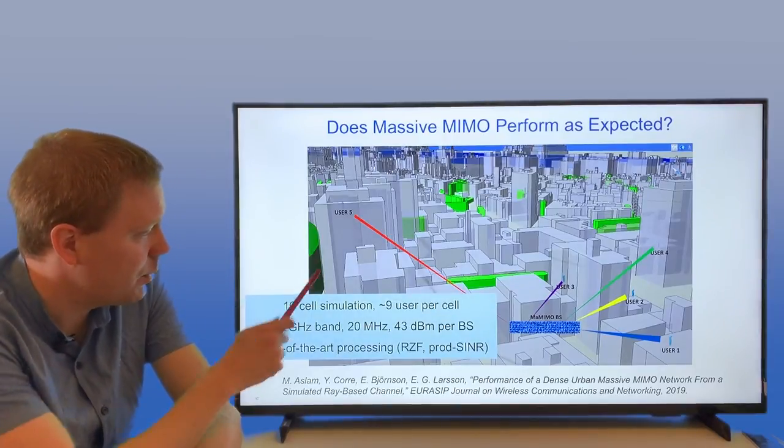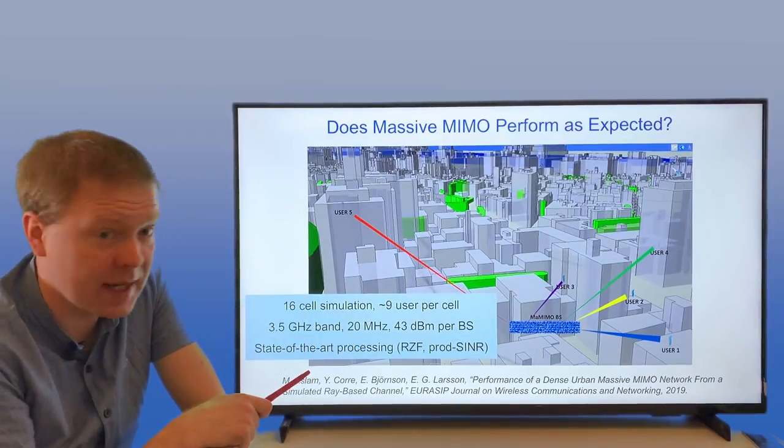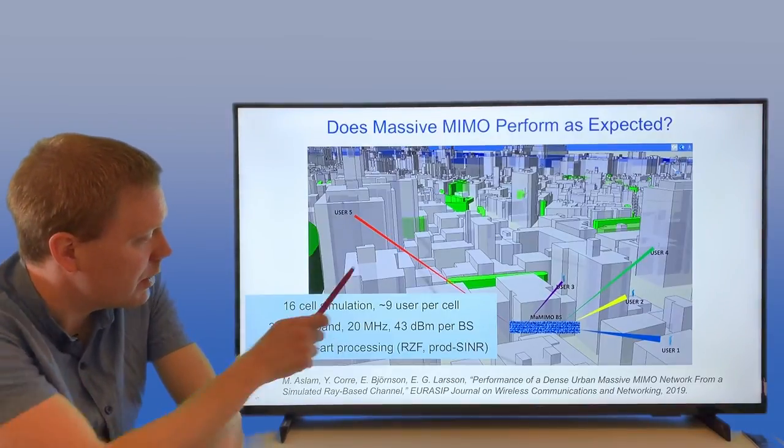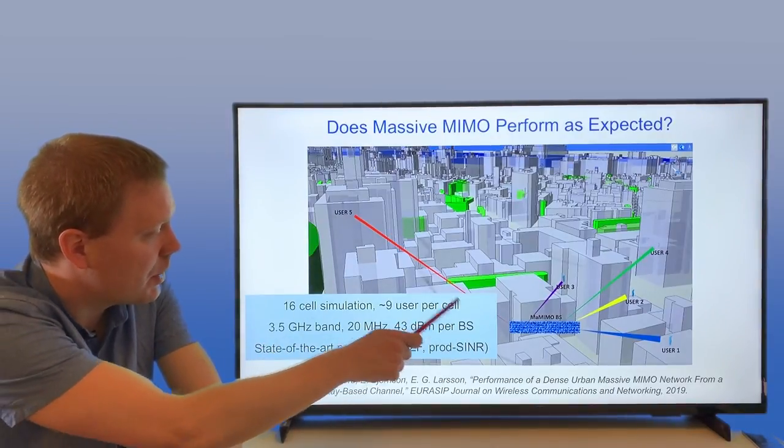We have 16 cells, around 9 users per cell at the same time. We use the 3.5 GHz band, 20 MHz of bandwidth, 43 dBm per base station, which is a typical number for the downlink power.